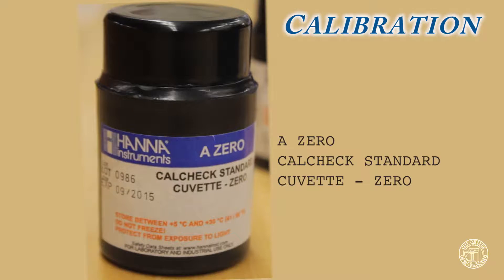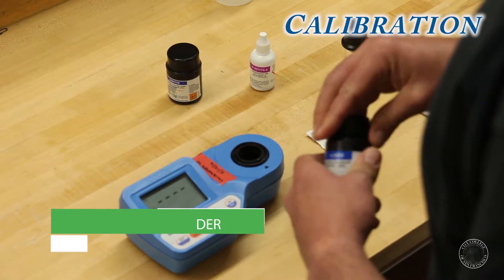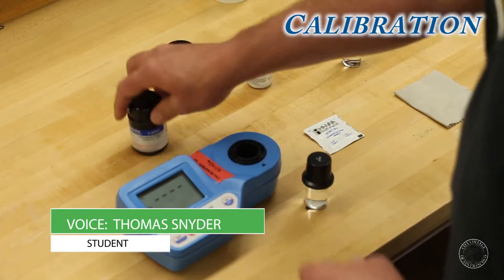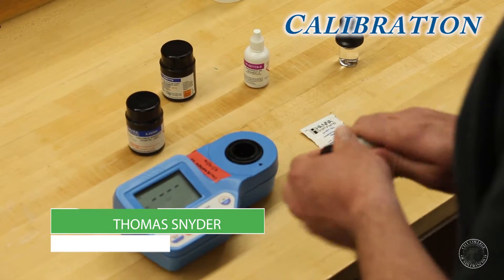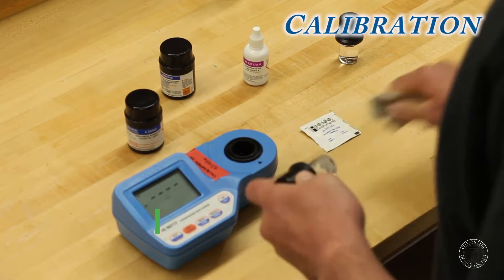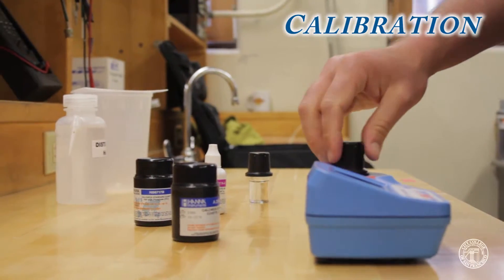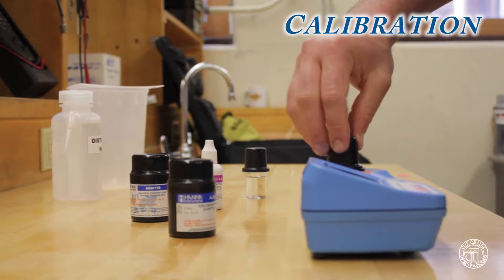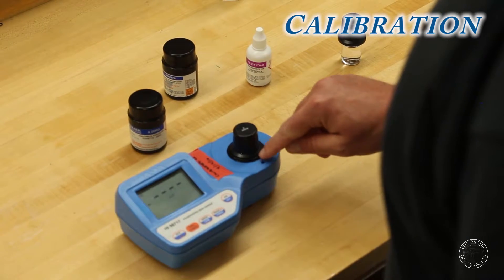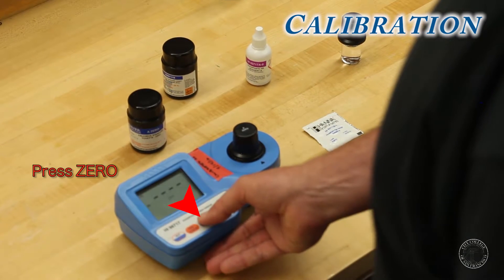Using your CalCheck zero standard, make sure to wipe the cuvette down. Then you'll turn to index it so the arrows will line up here. Then press zero.